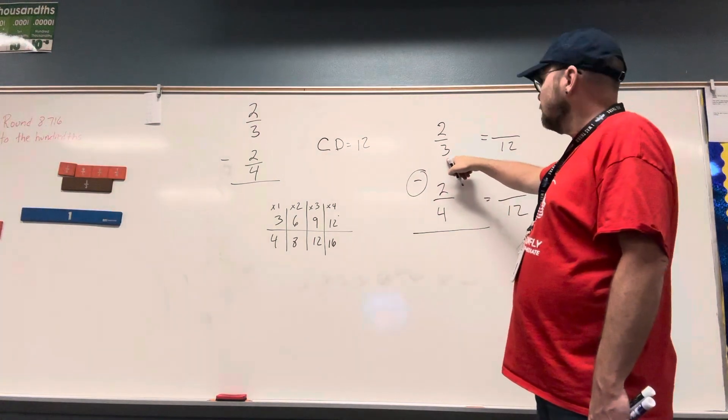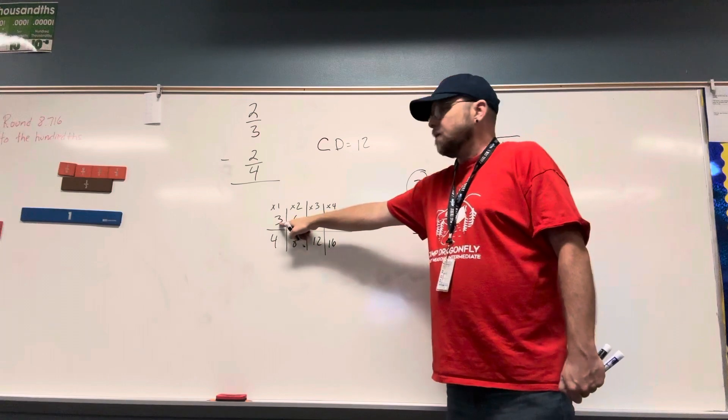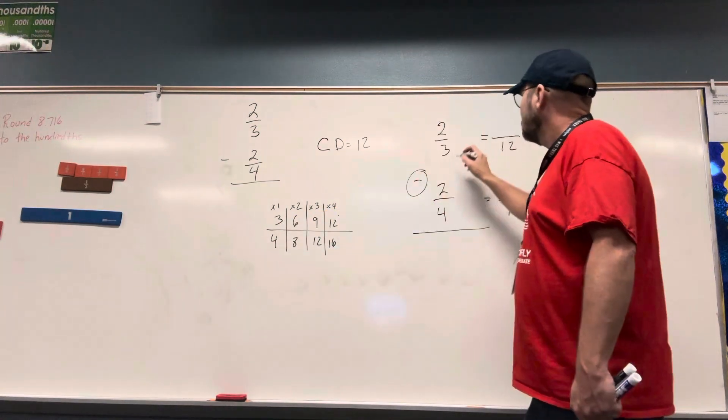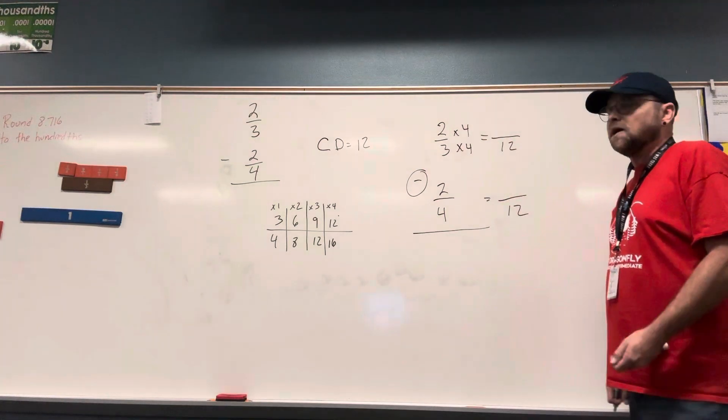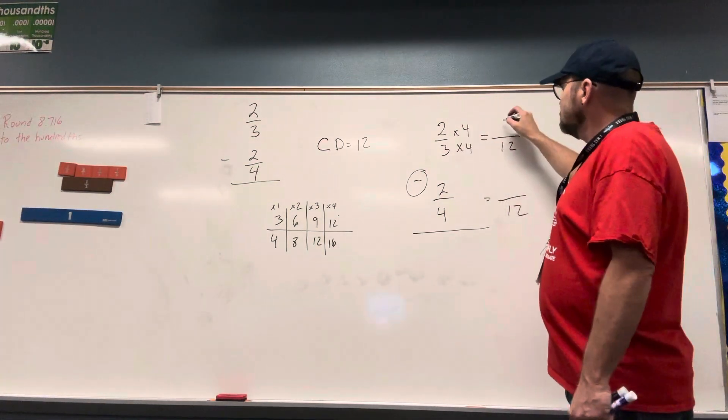I can come back over here. What did I multiply by 3 to get 12? 4. If I multiply my denominator by 4, I must also multiply my numerator by 4. And 2 times 4 is? 8.